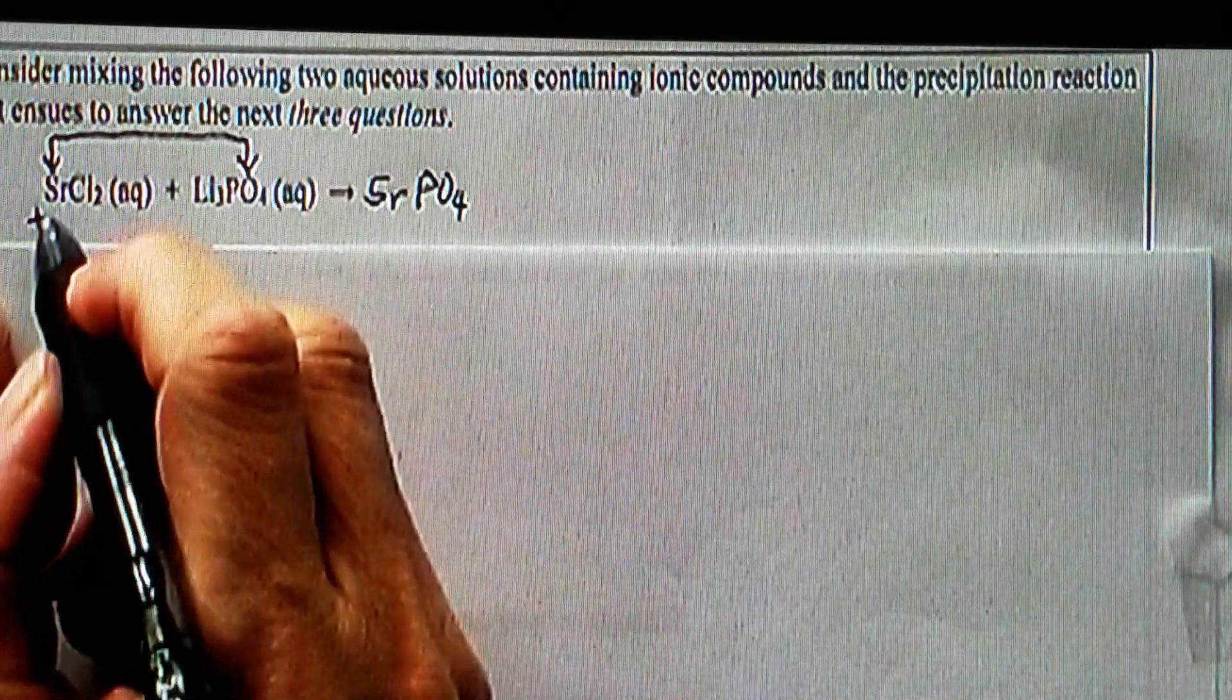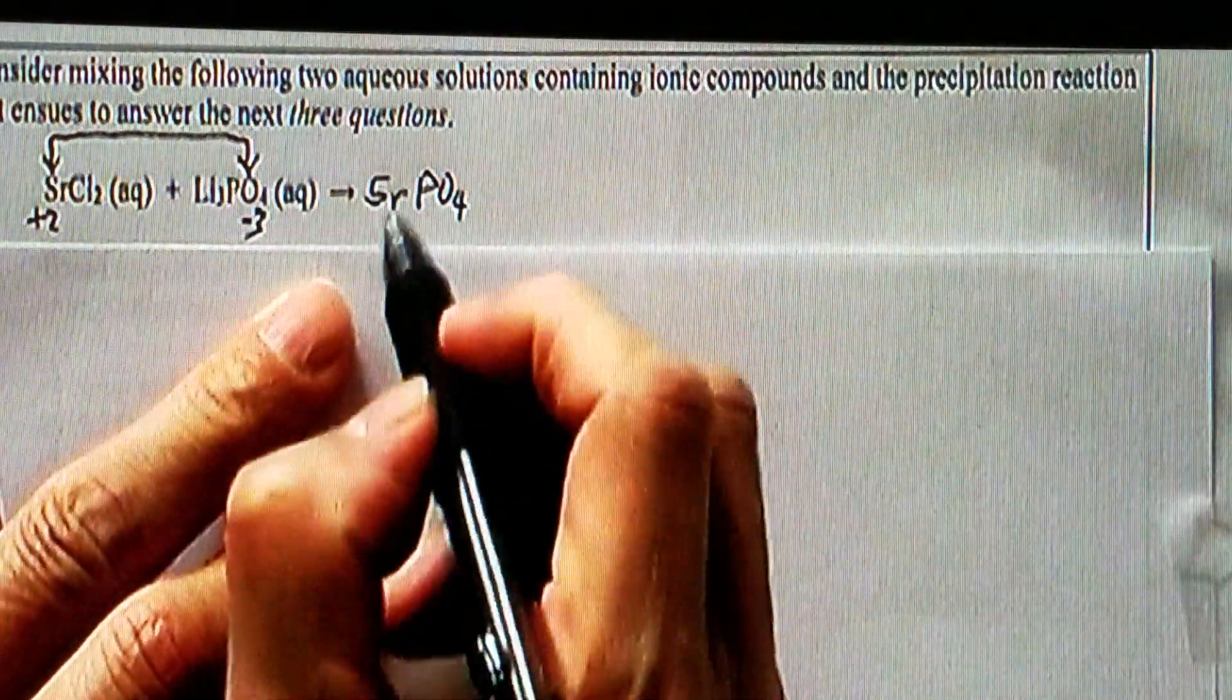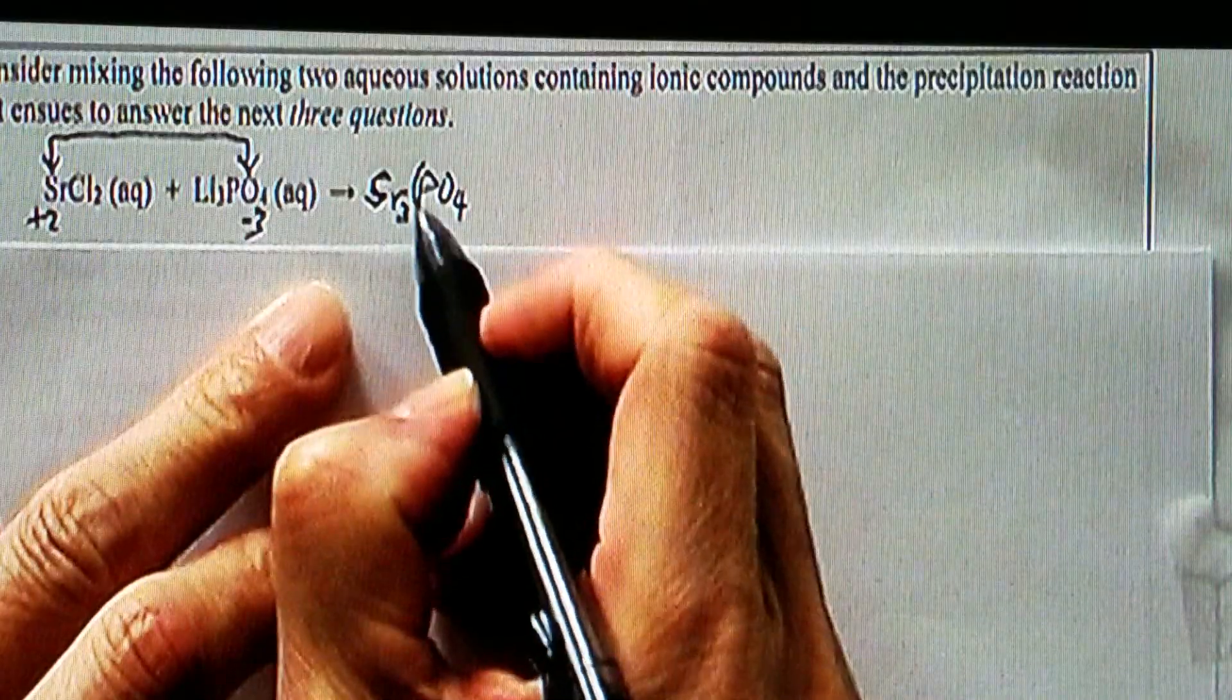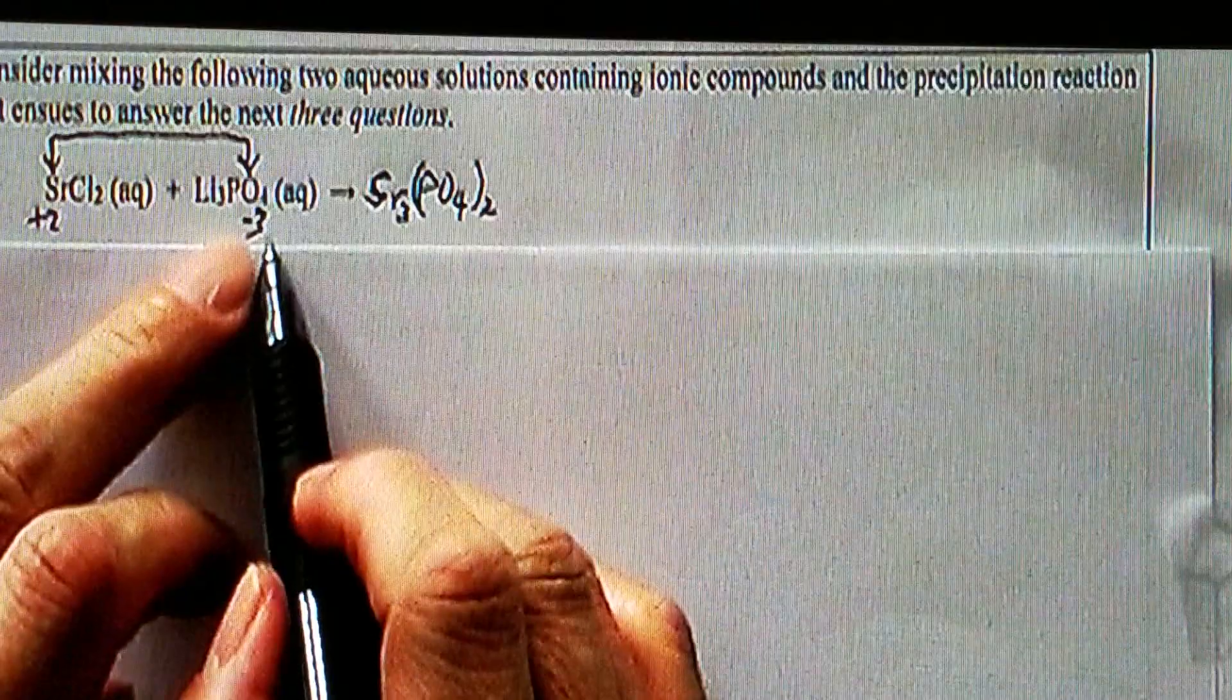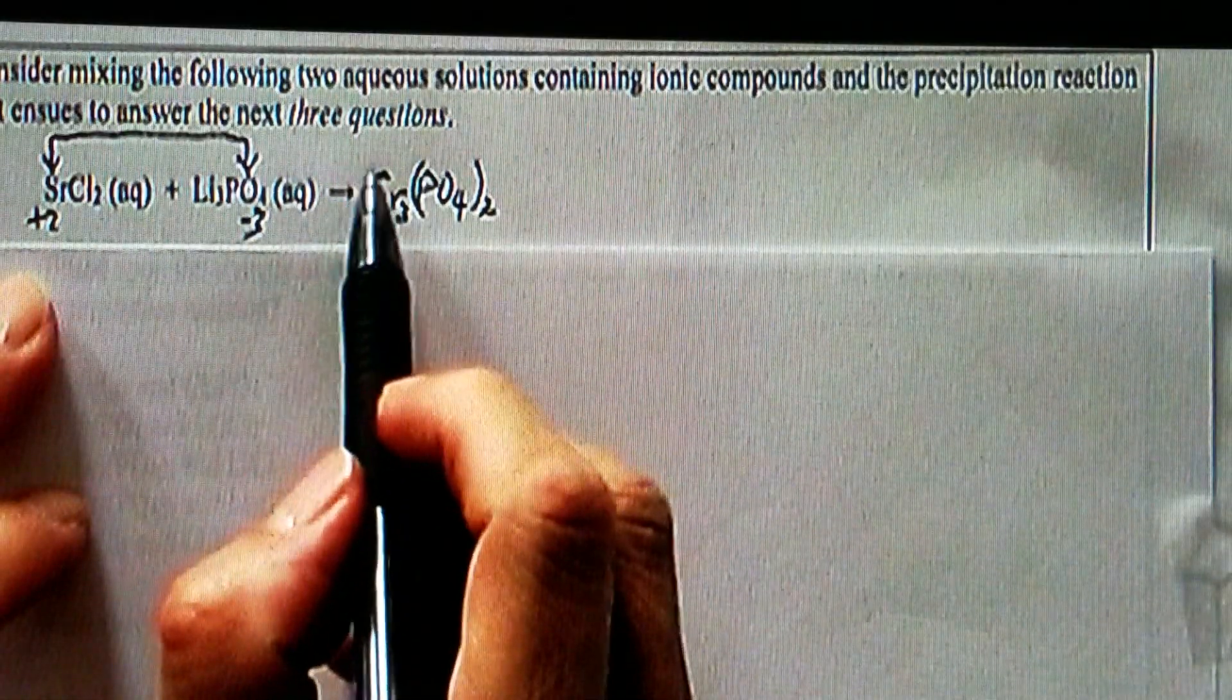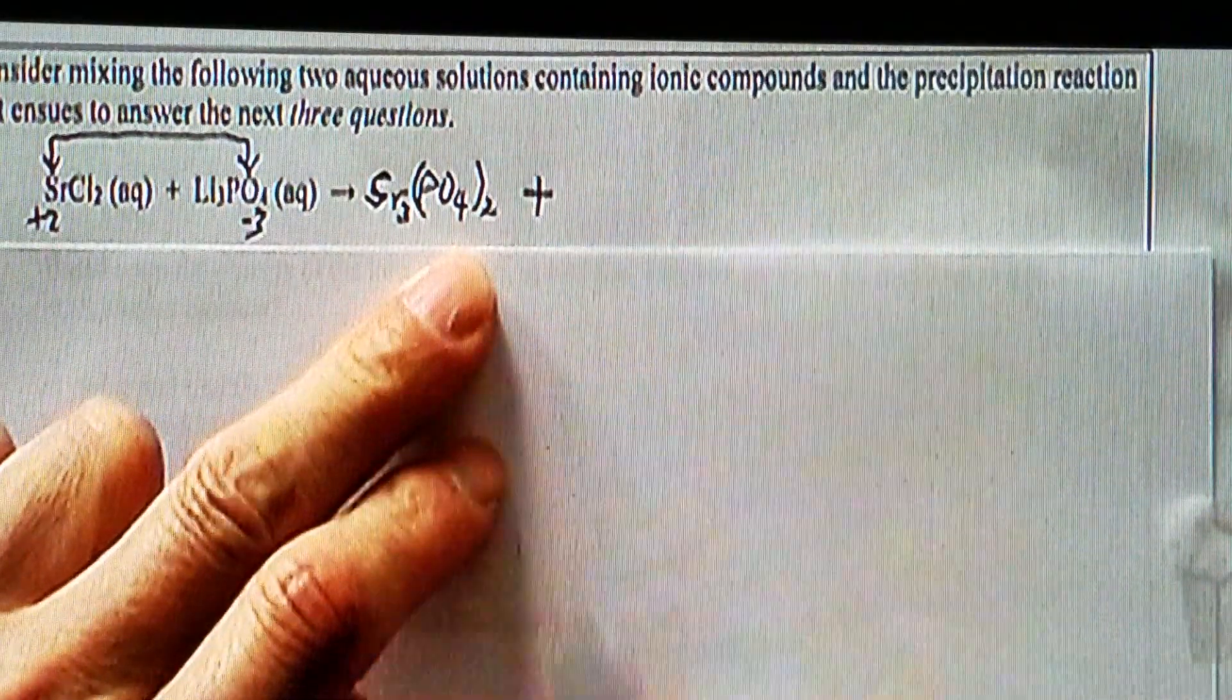So that one should have positive two, and phosphate is always negative three. Therefore, in order to balance, we need to have three Sr and two phosphate. Two times negative three, that's negative six. Then three times positive two, that's positive six. Positive six, negative six, this entire compound should be neutral.